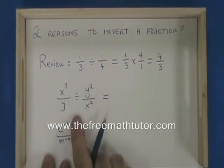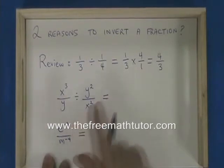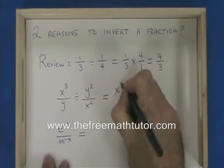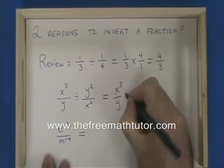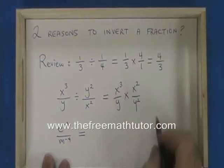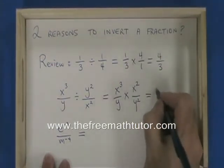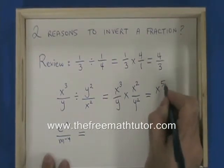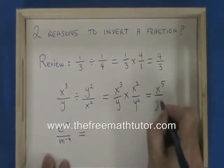x cubed over y divided by y squared over x squared is the same as x cubed over y times x squared over y squared, which gives us x to the power of 5 over y to the power of 3.